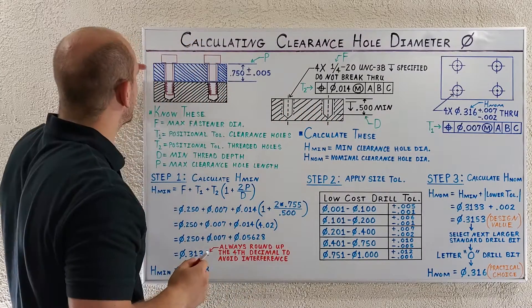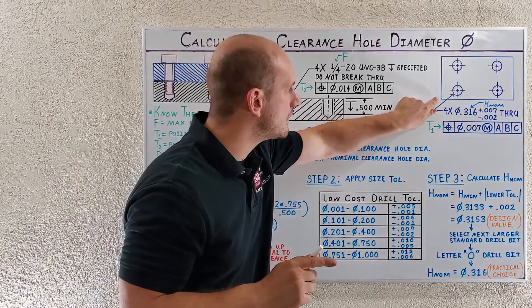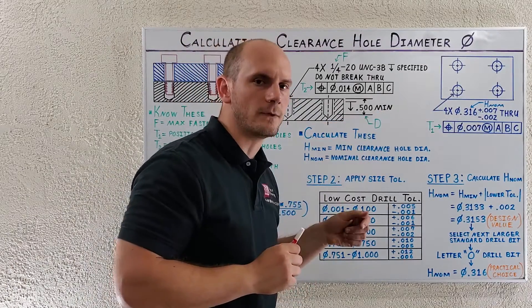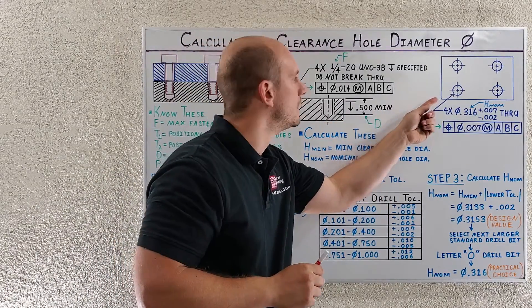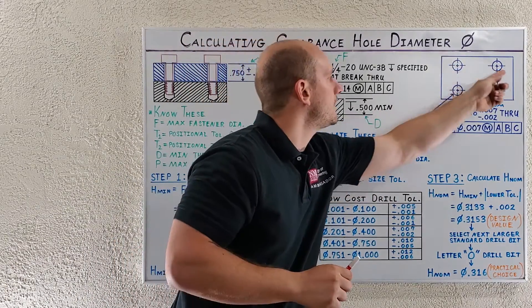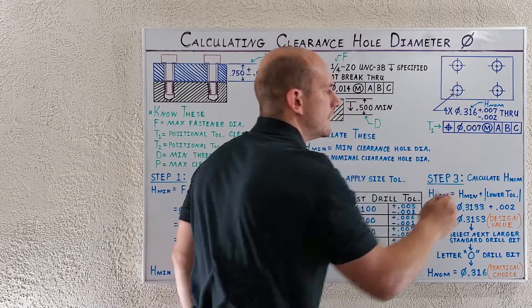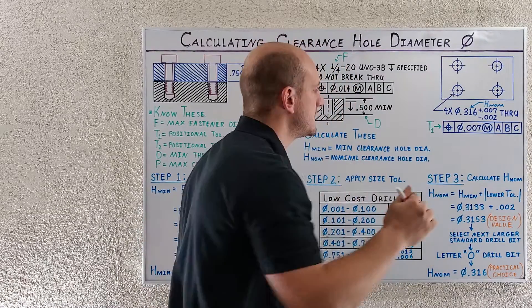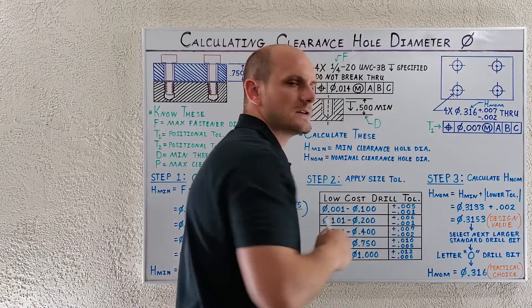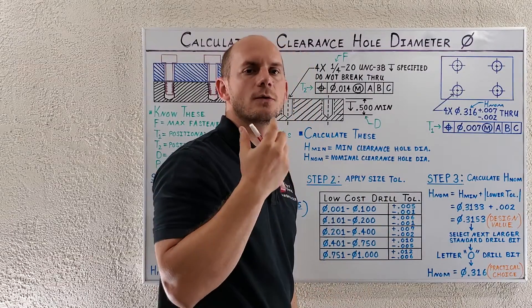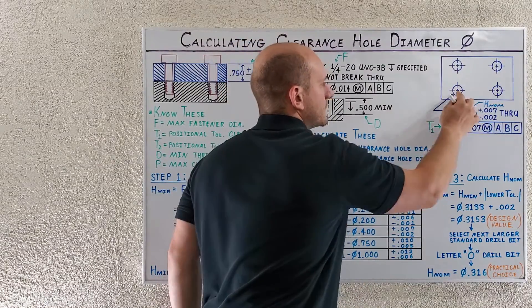For this upper plate I'm detailing that here in this top view. I've got my plate, my clearance holes, my clearance hole call-out, and then once again my positional tolerance that I'm using to control the locations of those clearance holes.